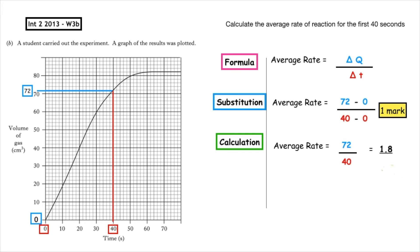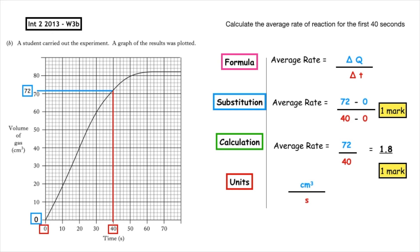To work out the units, look at the quantity units on the y-axis — in this case, centimetres cubed — and the time units on the x-axis, which are seconds. So we rewrite the units as centimetres cubed seconds to the minus 1.